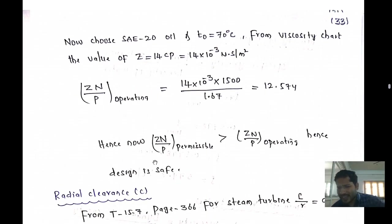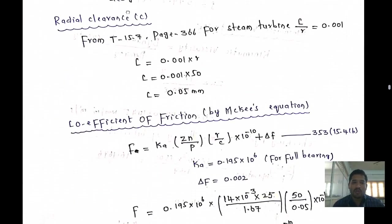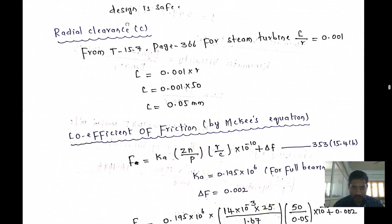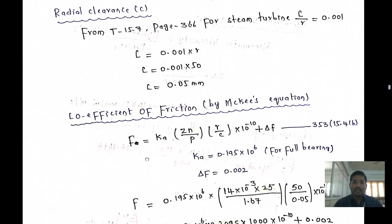Next, we find the radial clearance. From table 15.7, page 366 for a steam turbine, c/r = 0.001. Therefore, c = 0.001 × r = 0.001 × 50 = 0.05 mm.